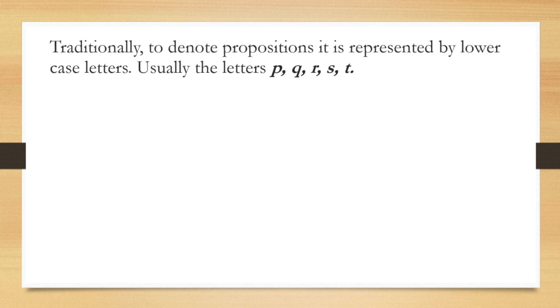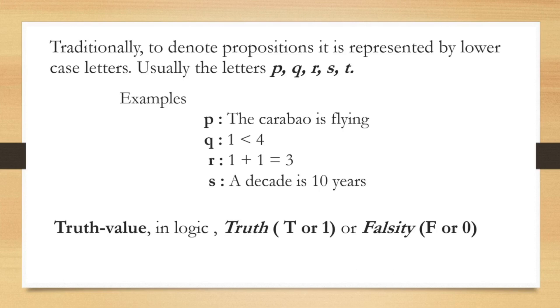Traditionally, to denote propositions it is represented by lowercase letters. Usually the letters are P, Q, R, S, and T, but you can use other letters. For examples, the proposition P defined by the statement the carabao is flying. The proposition Q defined by the statement one is less than four. Proposition R defined by one plus one is equal to three. And the proposition S defined by a statement a decade is ten years. And take note that a proposition can be a true or a false statement. If it is true, we can assign value as T or 1. If it is false, we can assign value as F or 0.